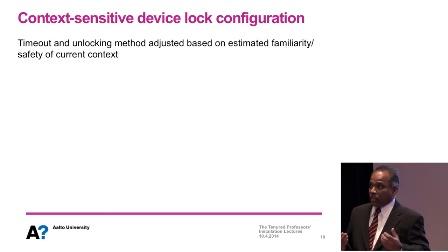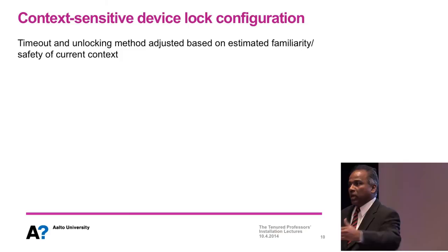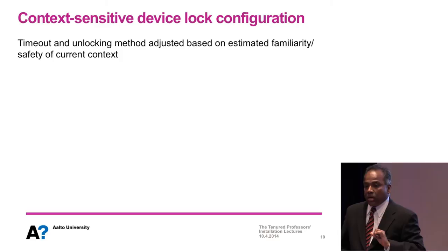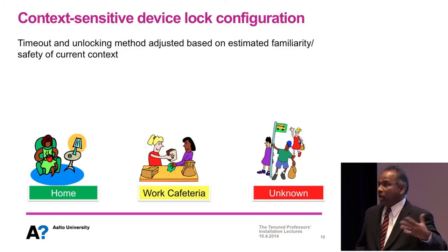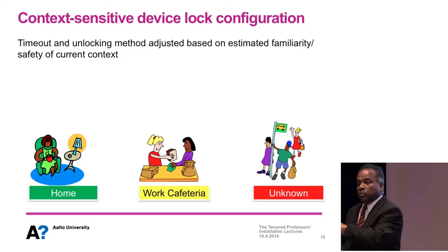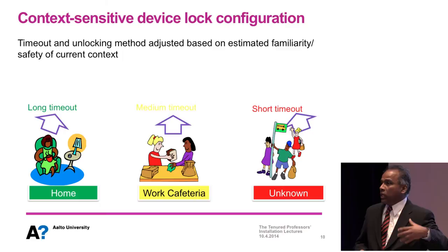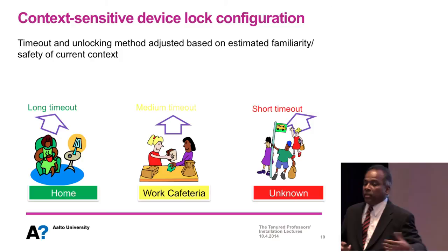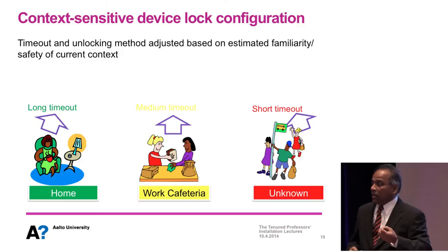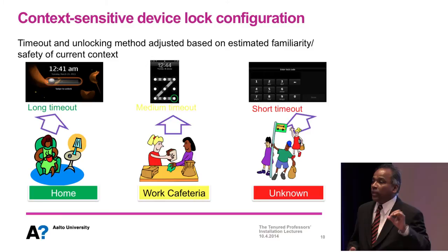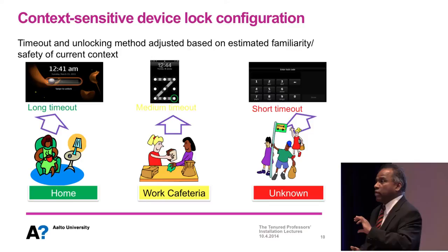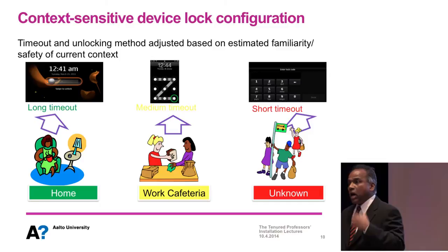One approach is to make the device lock context-sensitive. Rather than a fixed timeout or fixed unlocking method, you make it adjust to context. Think about your daily life: you spend time at home, which is familiar and stable, and other time at a bus stop, which is unfamiliar and volatile. If your device could figure out which context it's in, it could choose a relaxed, longer timeout in a safe or familiar place, and lock quickly in an unfamiliar place. It can also change the unlocking method — easy in a safe place, more demanding in an unsafe one.